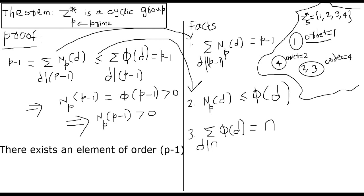We also proved in the previous segment that the sum of φ(d) for all d dividing n equals n. So in place of n we have p minus 1, meaning the sum of φ(d) for all d dividing p minus 1 equals p minus 1. This equality comes from Fact 3.